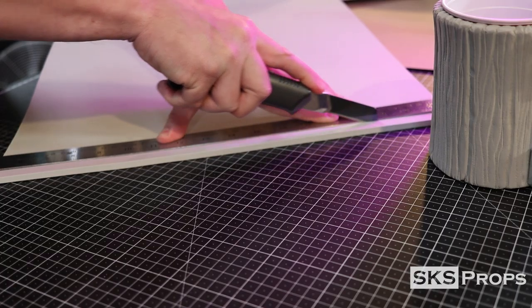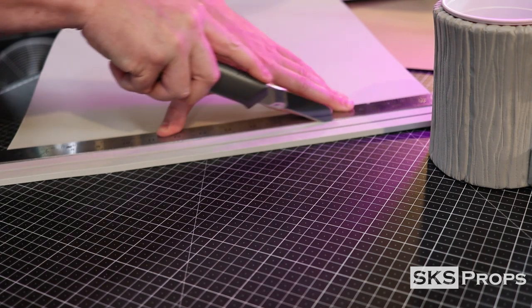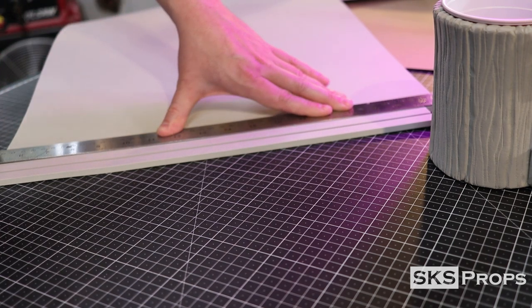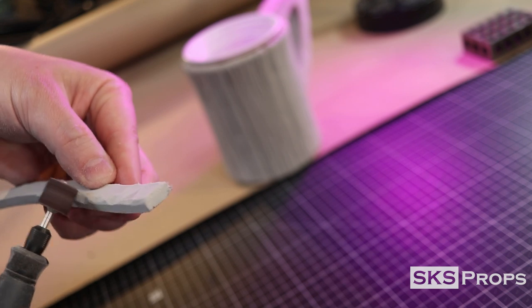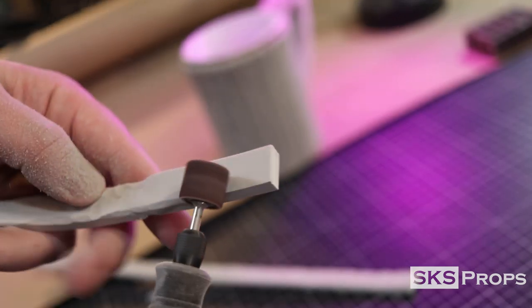To give the handle a little more reinforcement, I'm going to be cutting two strips of 6mm HD foam, approximately 15 inches long. These will represent metal bands that will wrap around the entire piece.